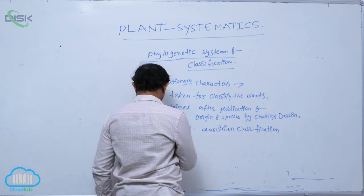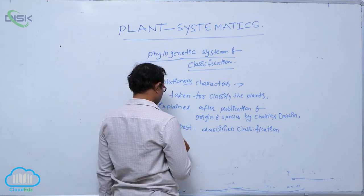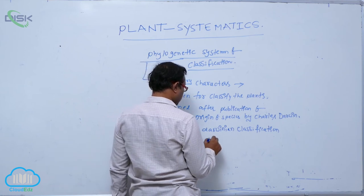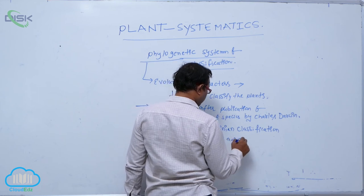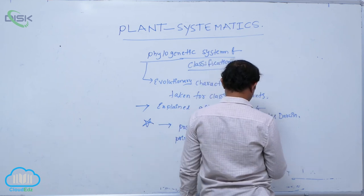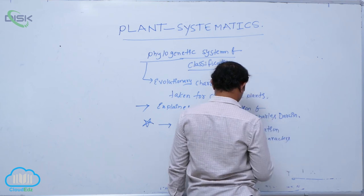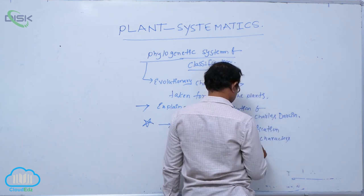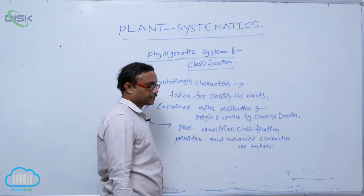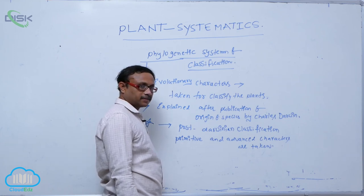In the phylogenetic system of classification, both primitive and advanced characters are taken for classifying the plants.